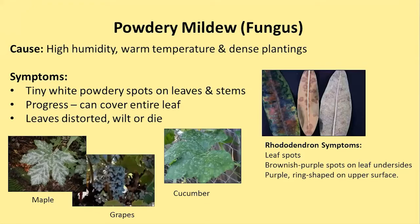Powdery mildew is a fungus that most gardeners will see sometime in their gardening life, and it can come onto many different plants. The cause of powdery mildew is high humidity, warm temperature, and dense plantings. The symptoms on most plants are tiny white powdery spots on the leaves and stems. As it progresses, it can cover the entire leaf, and sometimes leaves will become distorted, wilted, or die.